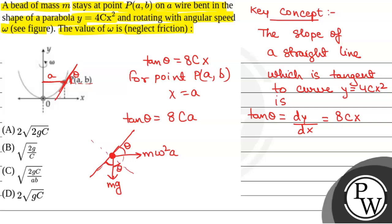So if we take the components of both the centrifugal force and weight along the tangent line, the component of centrifugal force along the tangent will be MΩ²A cosθ, and the component of weight along the tangent will be Mg sinθ.